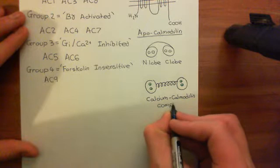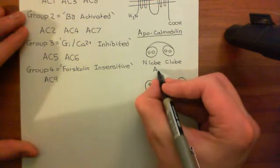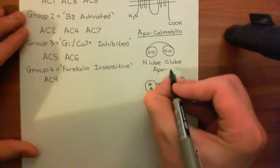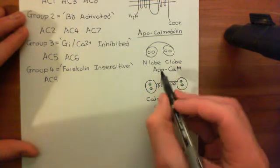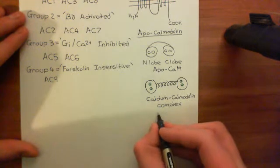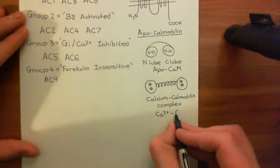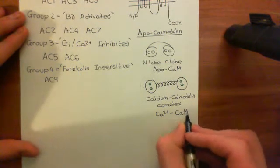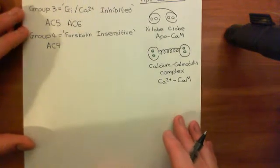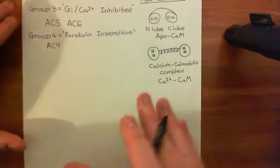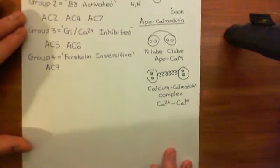Apocalmodulin is usually abbreviated to apoCaM (uppercase C, lowercase a, uppercase M). Calcium-calmodulin complexes are abbreviated as Ca²⁺/CaM. Calmodulin changes conformation in response to calcium binding to its four calcium binding sites.